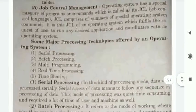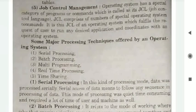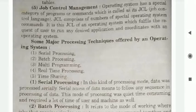Job Control Management. The operating system has a special category of programs or commands which is called its JCL — Job Control Language. JCL comprises a number of special operating system commands. It is this JCL of an operating system which fulfills the request of the user to run any desired applications and coordinates with the operating system.